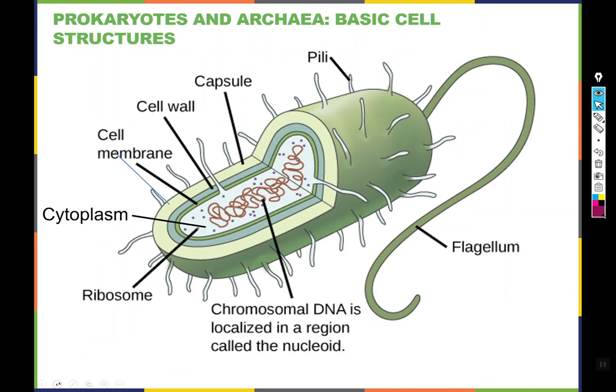We're going to start by looking at prokaryotes. This is a basic garden variety prokaryote with basically all the possible features of prokaryotic cells — not because all prokaryotes look like this, but because we needed a picture to show you all this stuff. Inside the cell there is a watery mixture of ions, proteins, and other compounds called the cytoplasm. There are also numerous ribosomes that are just floating around in the cytoplasm — not attached to anything. That's a major distinction from eukaryotes. The DNA is localized in a region called a nucleoid, which means nucleus-like, implying it is like a nucleus but is not a true nucleus because it's not contained within a membrane.